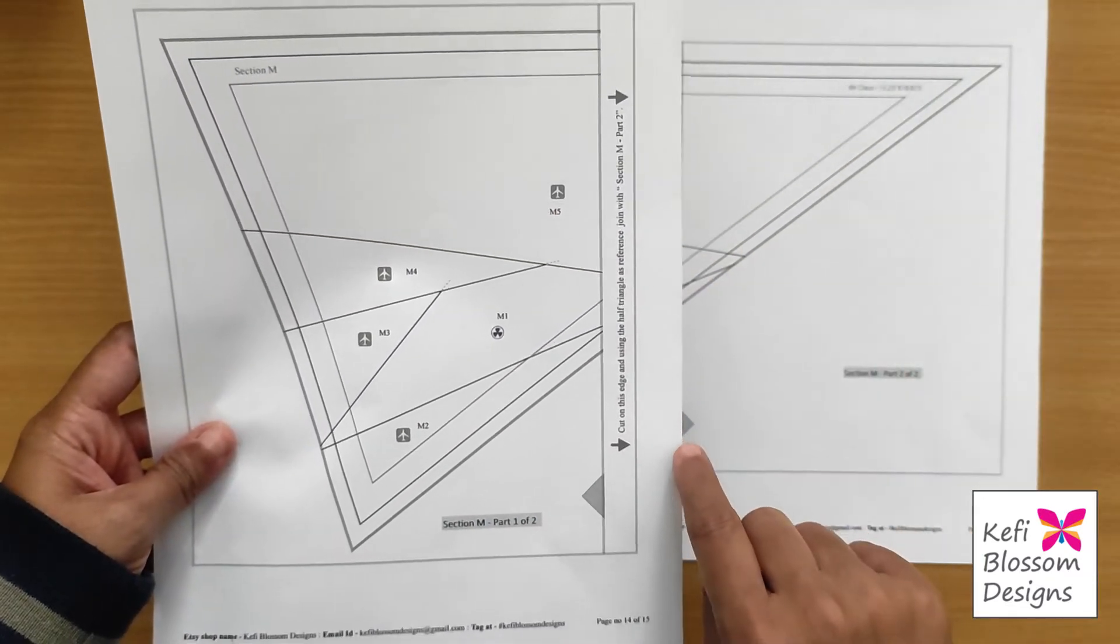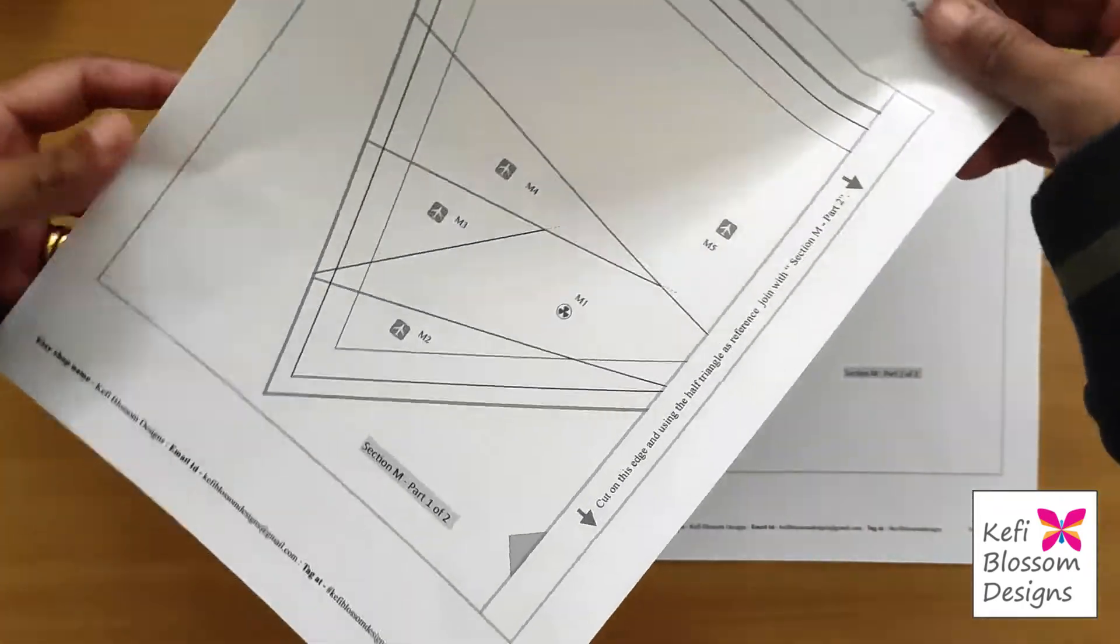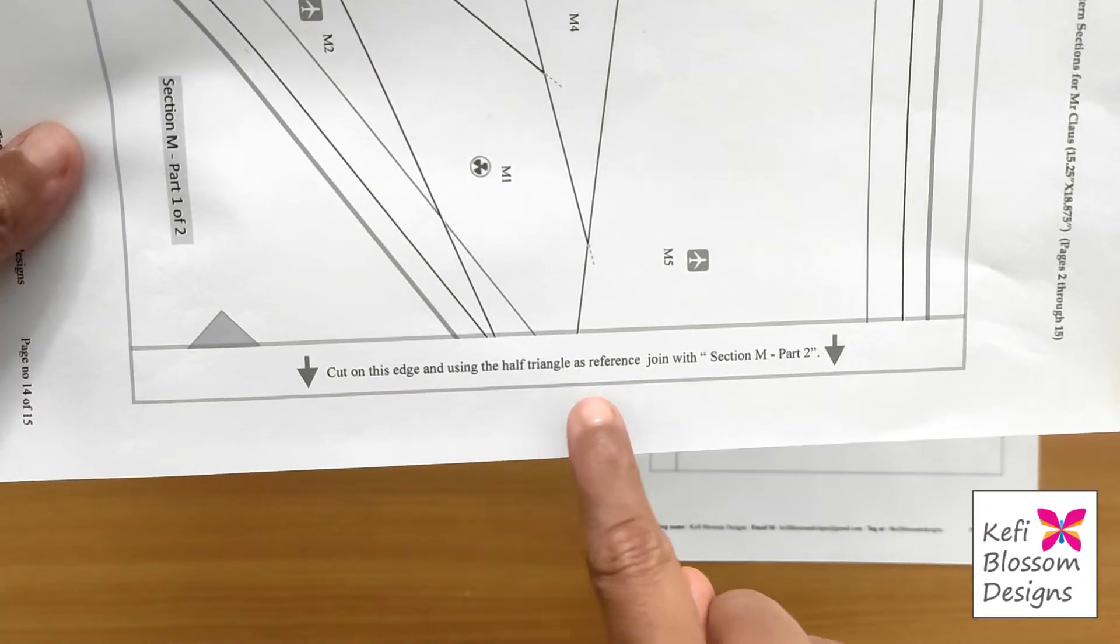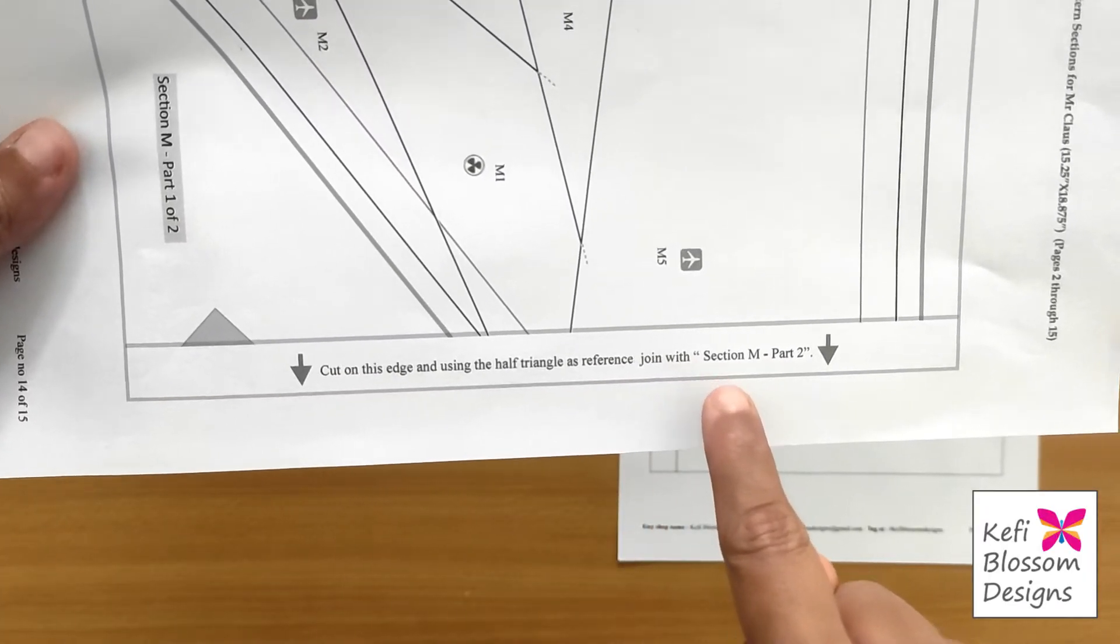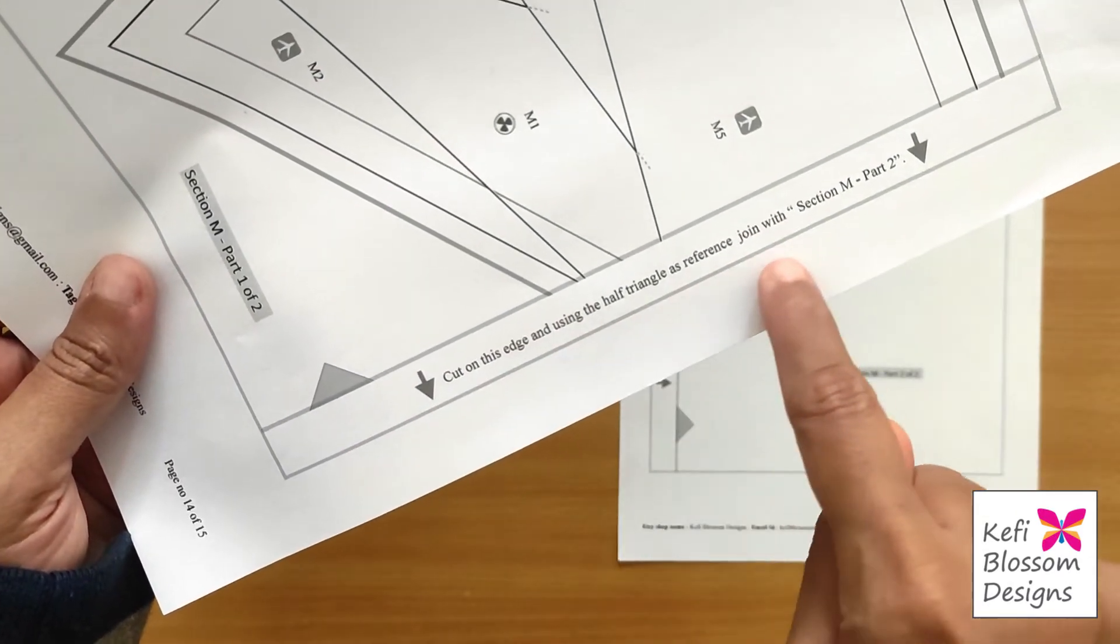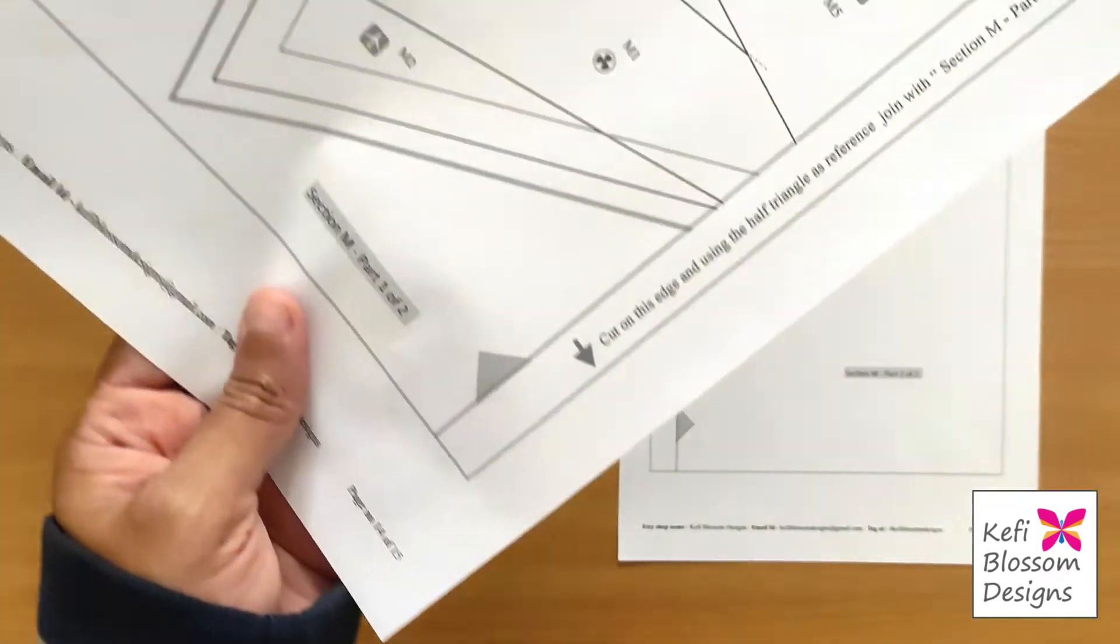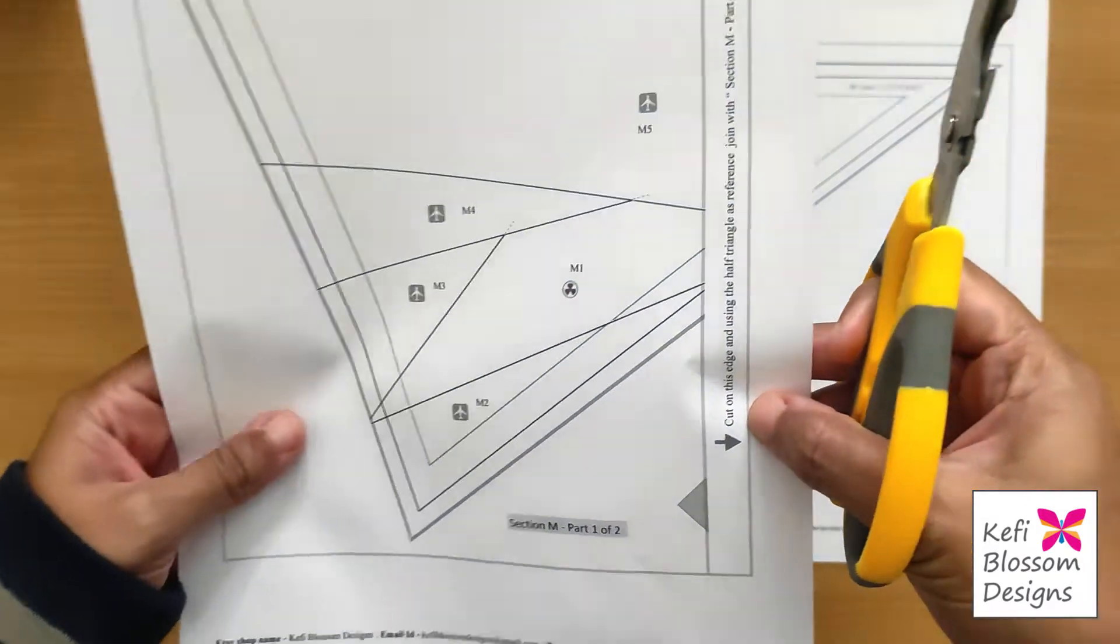On some side of the cut section, there will be some set of instructions. So in this case, it says cut on this edge and using the half triangle as reference, join it section M part 2. So then I'll cut on this edge. So you have to be very careful. You have to cut only on the edge that the arrow points at.